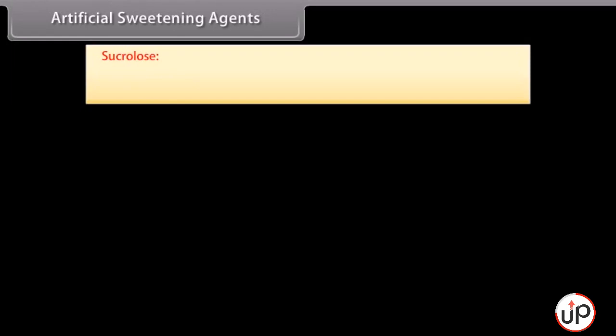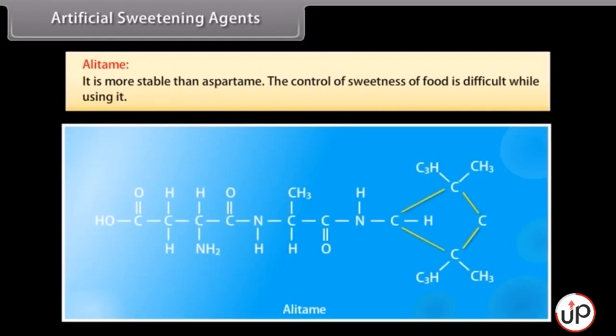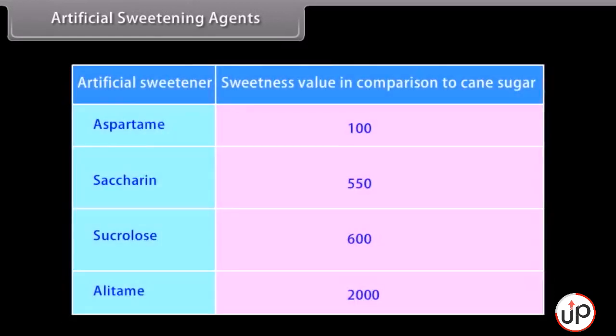Sucralose is a trichloro-derivative of sucrose — its appearance and taste are like sugar, it is stable at cooking temperature, and does not provide calories. Alitame is more stable than aspartame, but control of sweetness of food is difficult while using it. Aspartame is 100 times sweeter than cane sugar; saccharin is 550 times sweeter; sucralose is 600 times sweeter; and alitame is 2000 times sweeter than cane sugar.